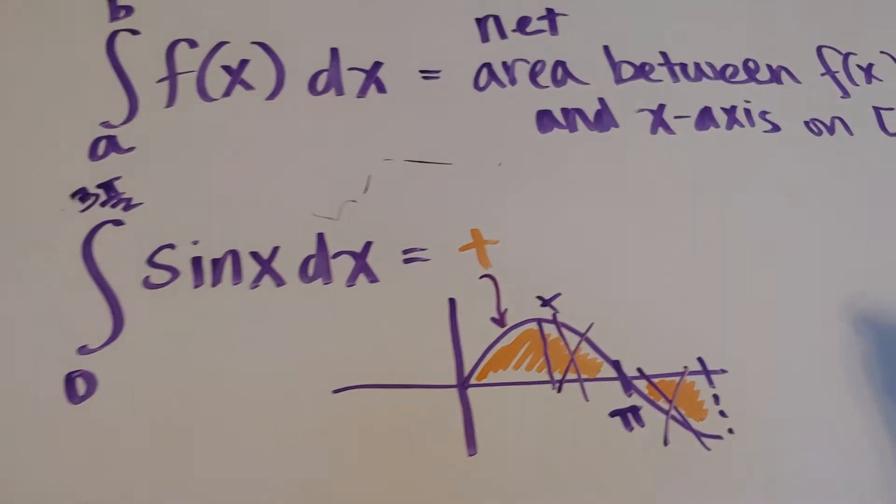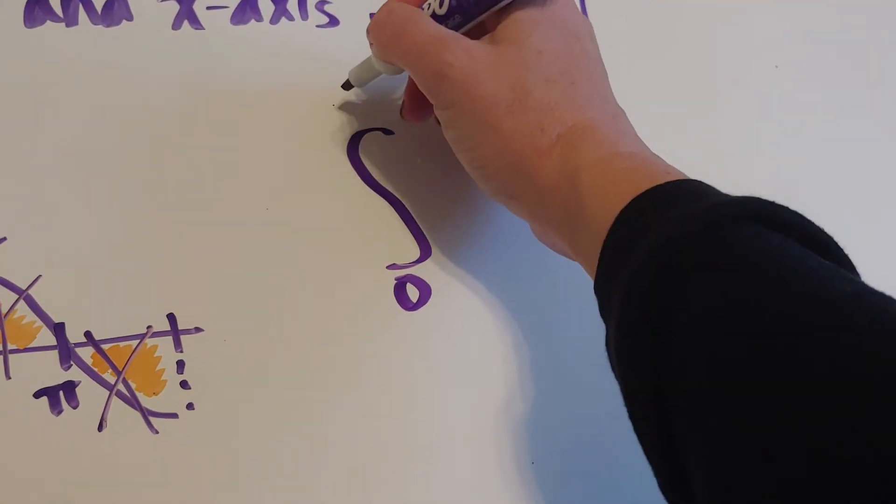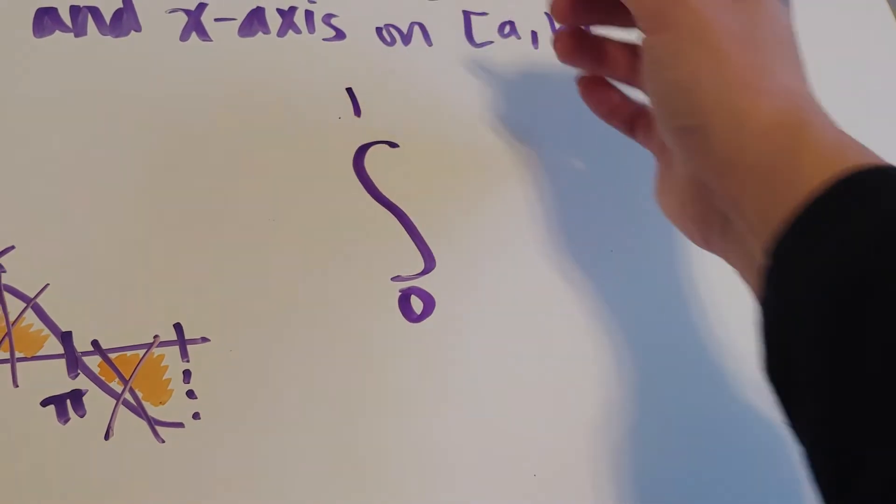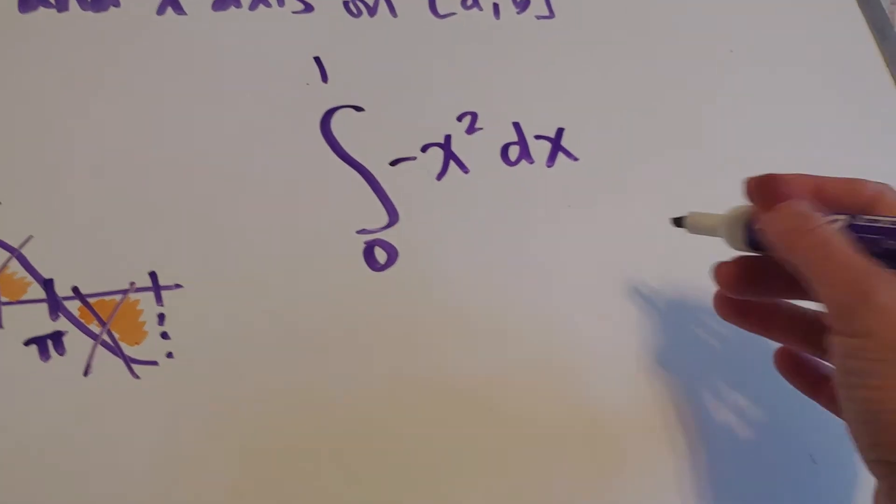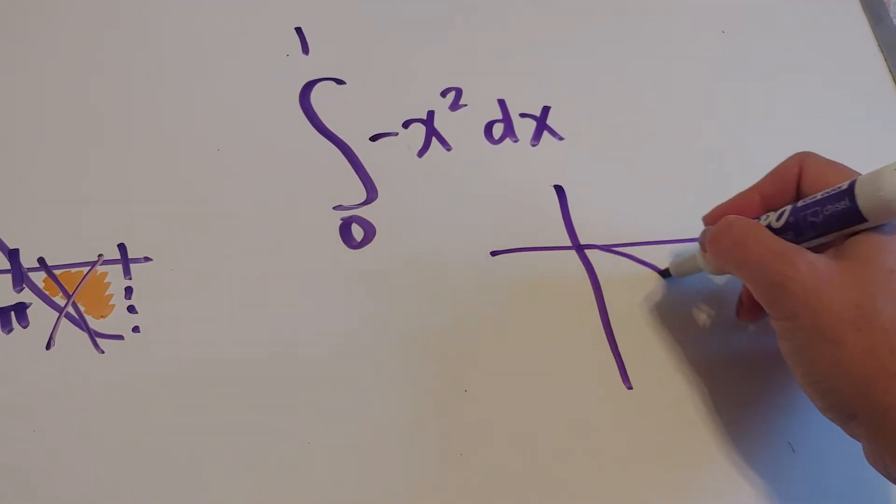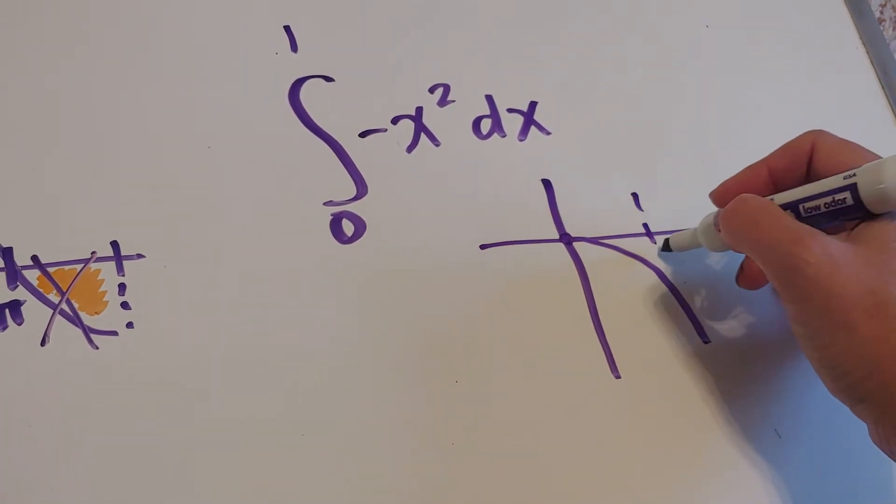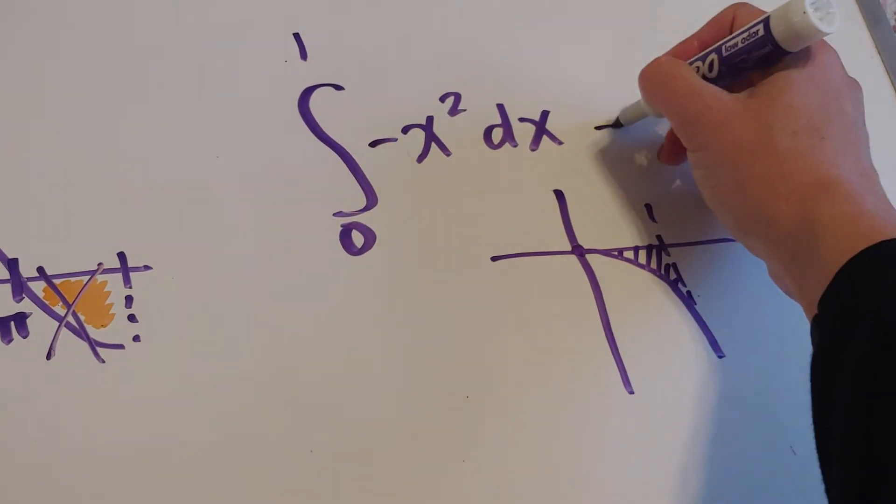Now, what happens if we were looking at all negative? Well, let's see. I could go from 0 to 1 of negative x squared. That would give me negative area because in this instance, I have a parabola opening down and from 0 to 1, that would be the negative area that I would be finding.